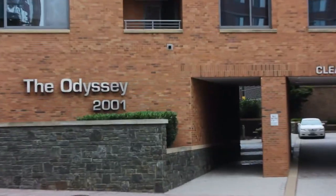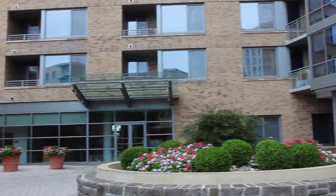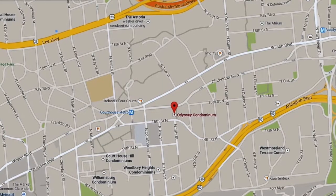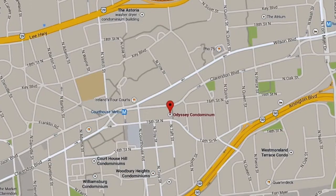Today we are talking about the Odyssey condominium building located in Arlington, Virginia. It's in the courthouse neighborhood. It's very luxurious. It was built in 2006. It's located at 2001 15th Street North, just a few blocks away from the courthouse metro.